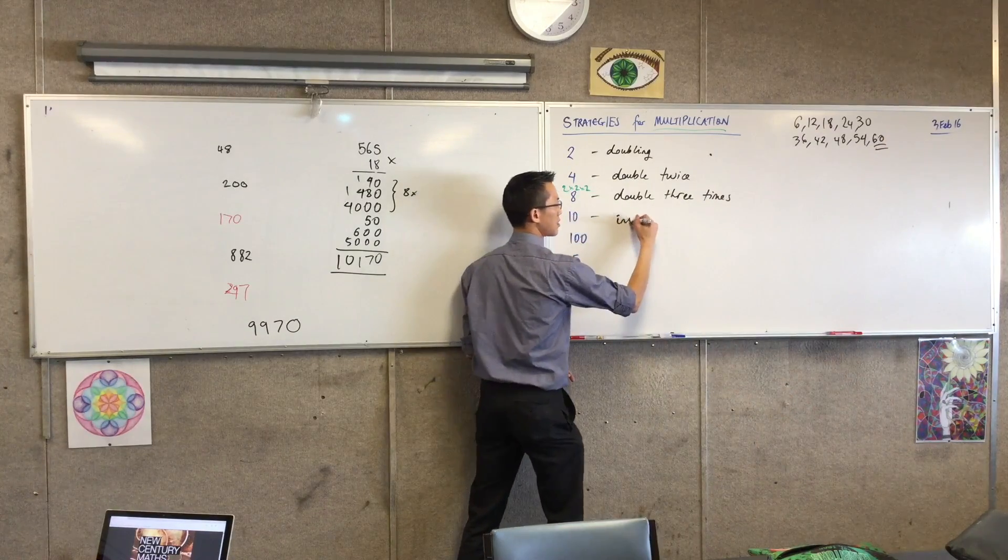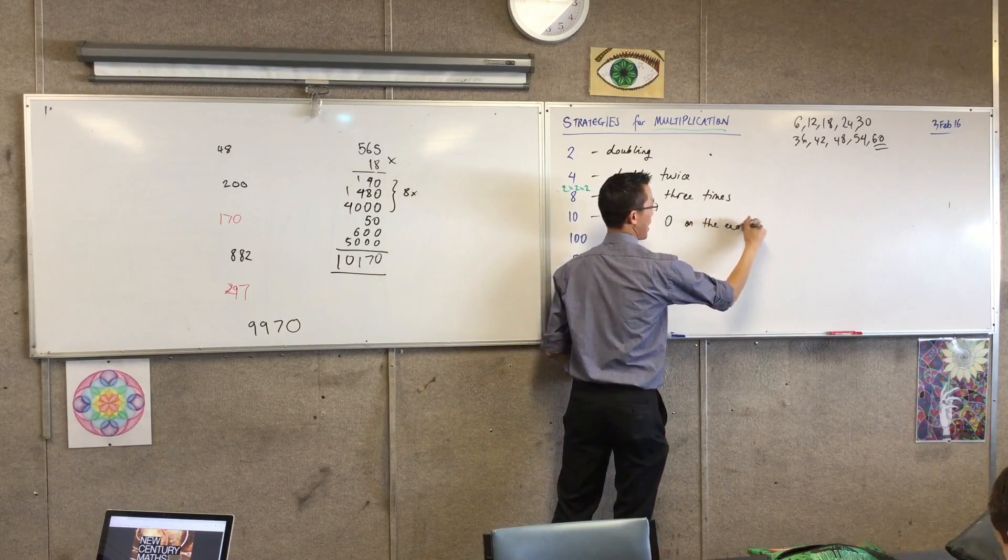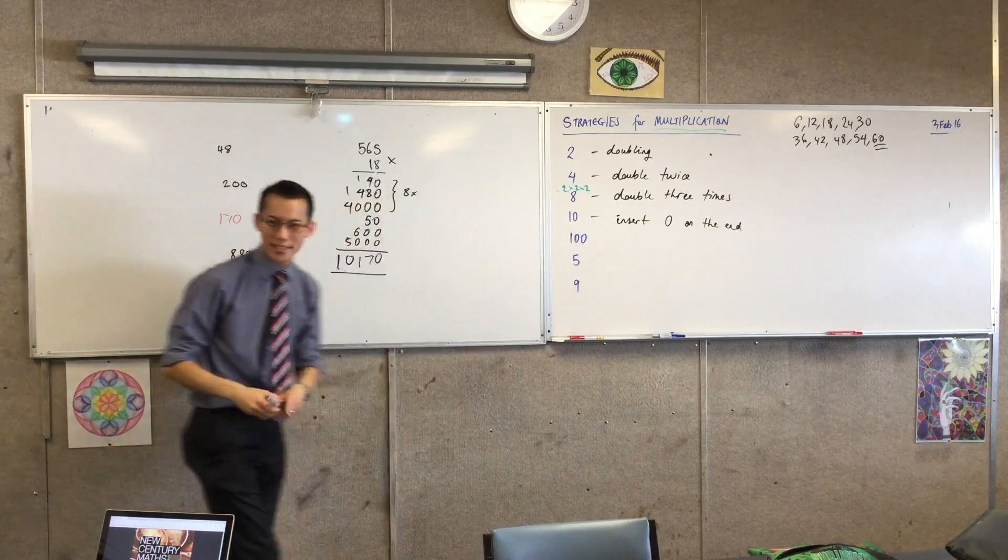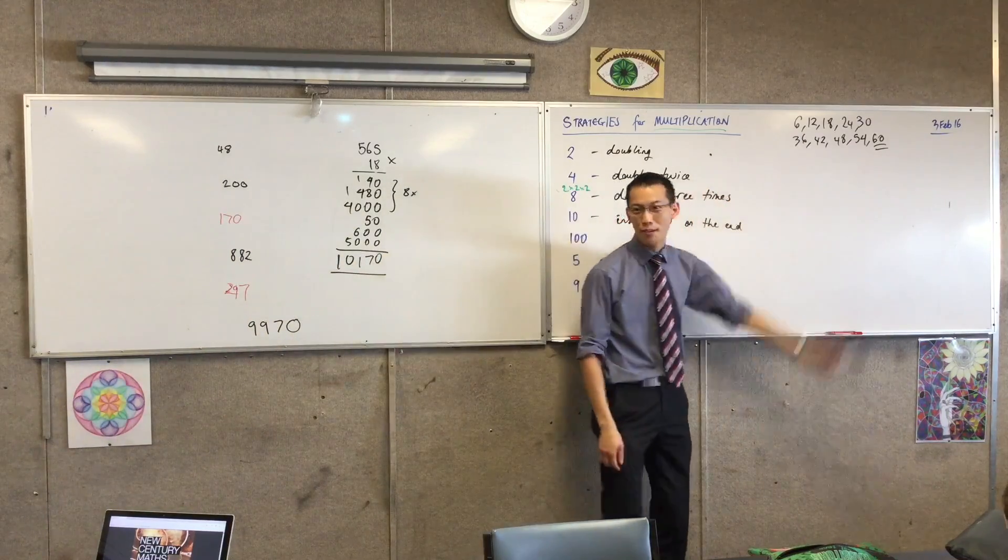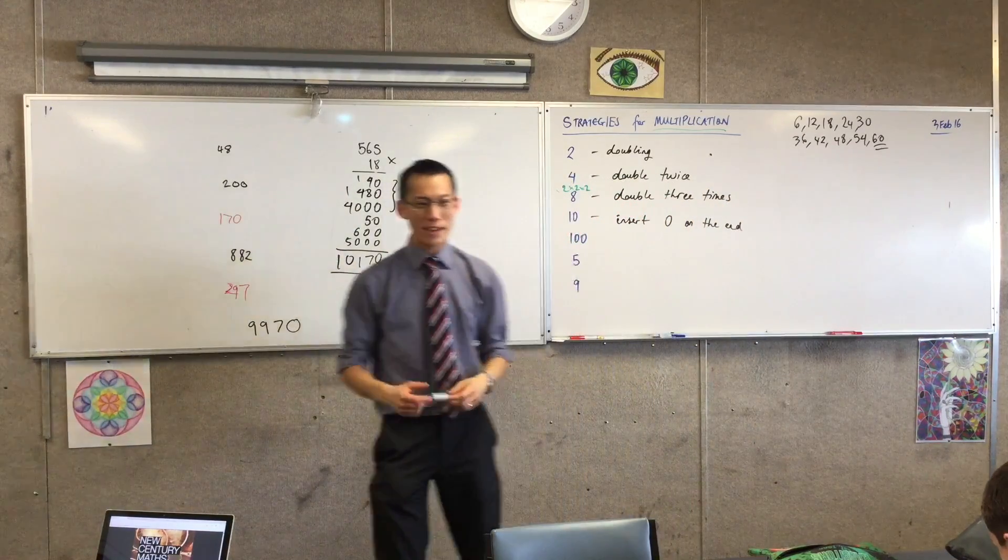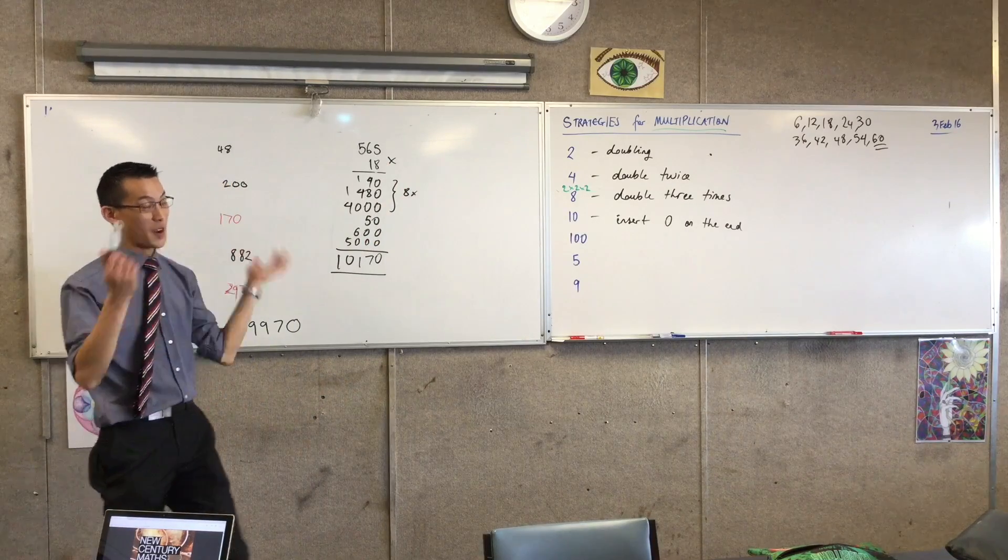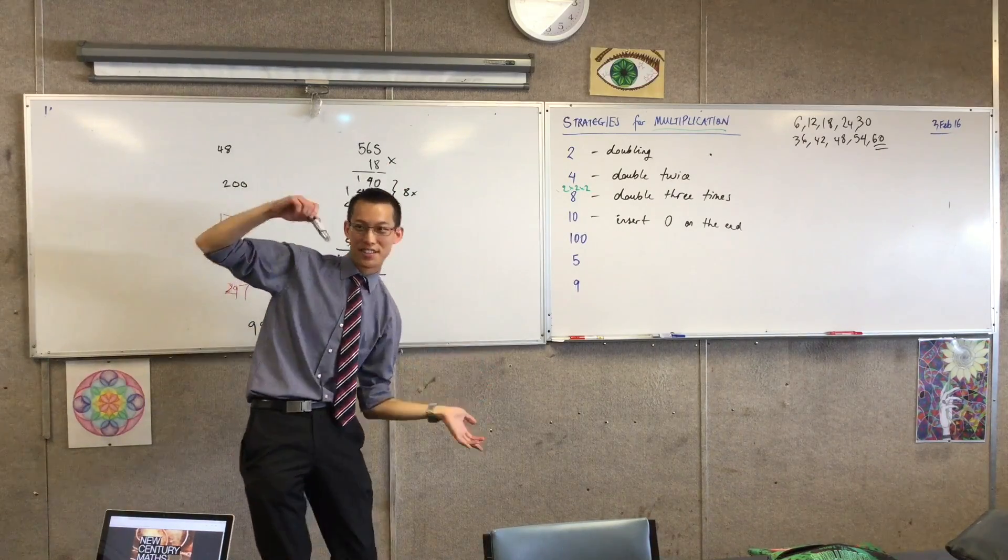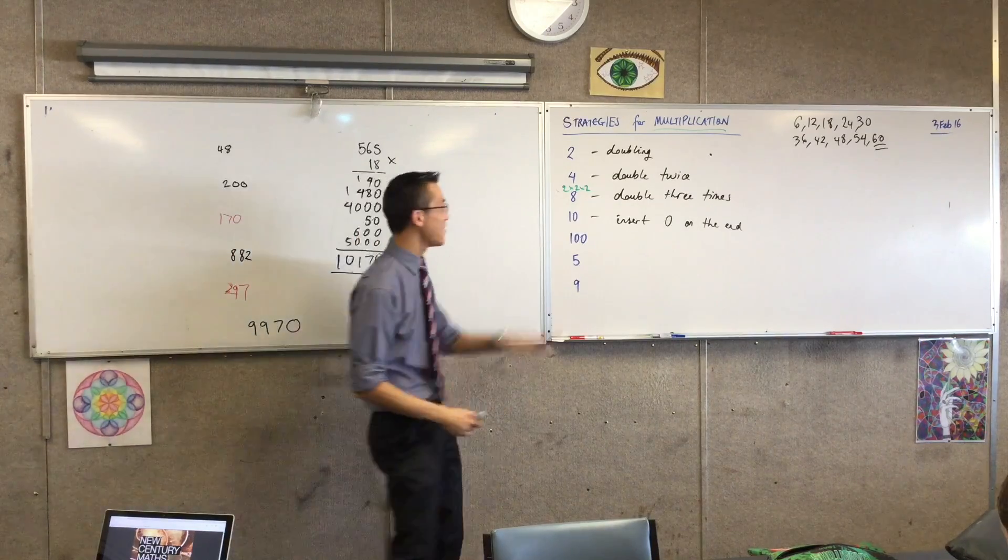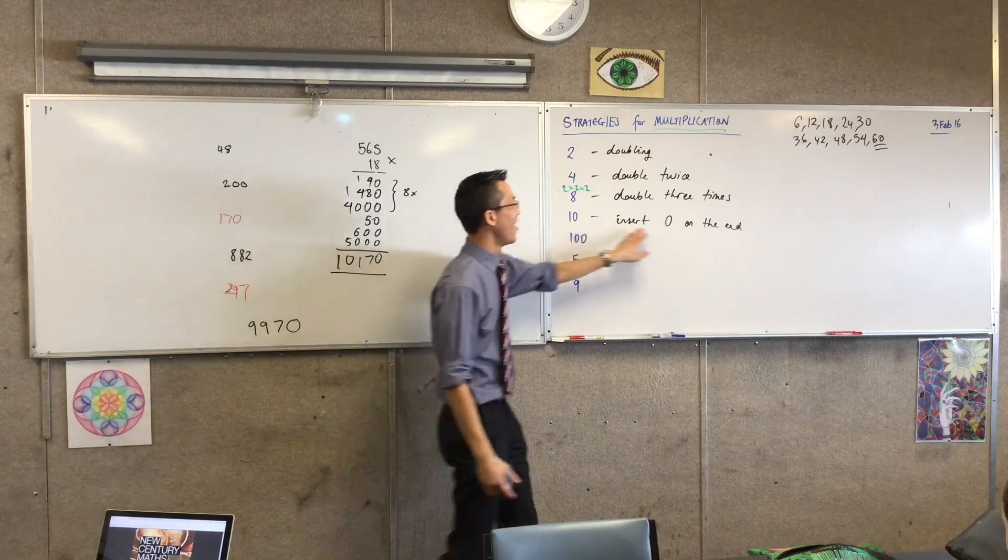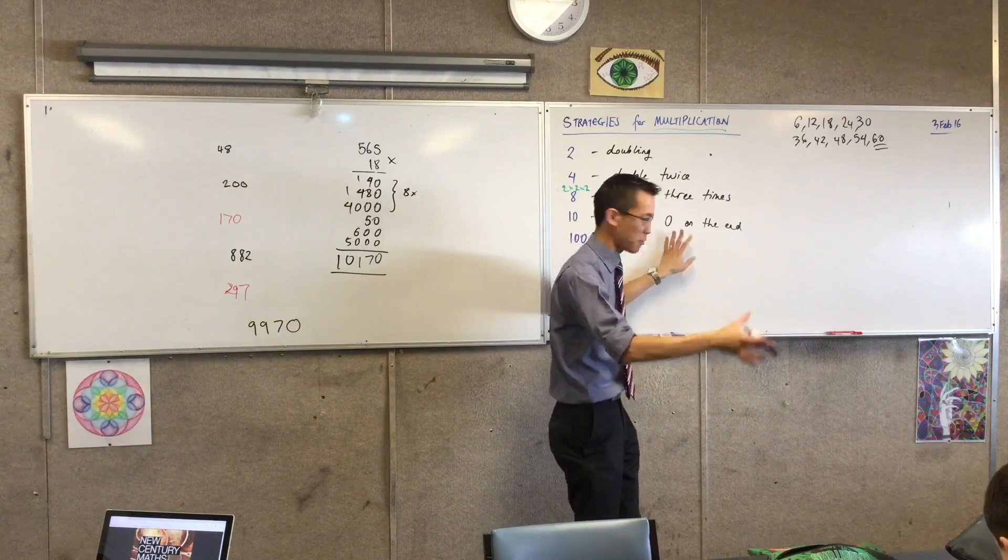So I'm going to insert 0 on the end. It's not only faster, but you know what? There's lots of numbers that I don't know the times tables for. For instance, I don't know about you, but I don't know my 217 times tables very well. 217, 434. I'm just going to stop there, right? If I want to multiply by 10, then I can know it's going to be 2170, right? Just insert the 0.